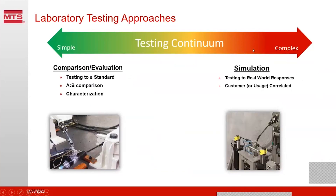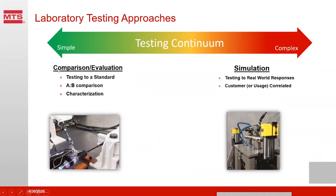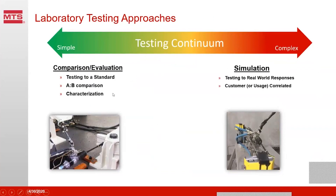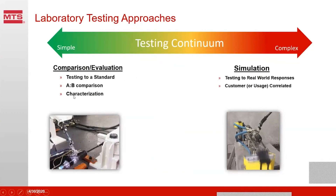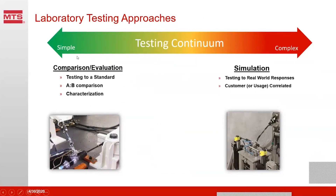This is an example of what I call the testing continuum. We go from fairly simple tests to much more complex tests. The simple tests are what I call comparison and evaluation type tests. We might be testing to a standard, comparing two designs — is design A going to last more cycles than design B? Or we might be characterizing, trying to figure out what properties we need to put into our computer models to get the right sort of responses.